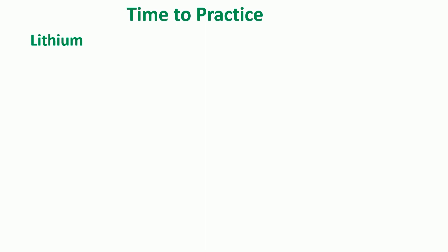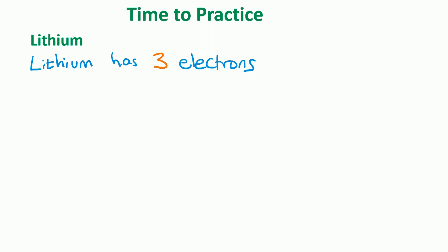Lithium has 3 electrons. We put 2 electrons on the first shell, and that leaves 1 electron to go on the second shell. So the written electronic configuration is 2, 1. Well done if you got that correct.